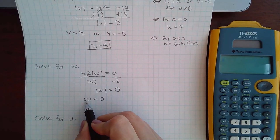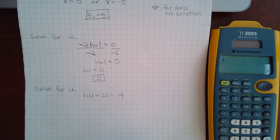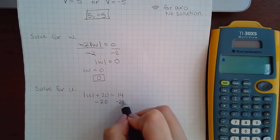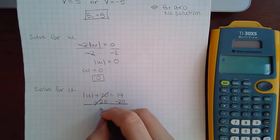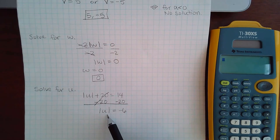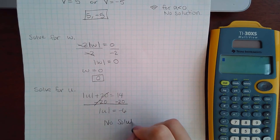Now for the last case, if I take this my 20 and minus it over to get rid of that, I end up with negative six. We know that the absolute value can never equal a negative number, so in this case it would be no solution.